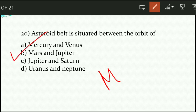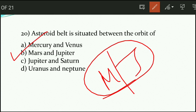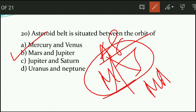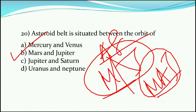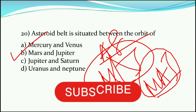Question number twenty, our last question: the asteroid belt is situated between the orbits of — option B is the right answer — Mars and Jupiter. You can remember it as 'M-J' — Mars then Jupiter. This was mock test number 7. I hope you have benefited. Please subscribe to my channel for support, as I will be uploading more mock tests and will be covering different books that will help you in your examinations. Thank you.